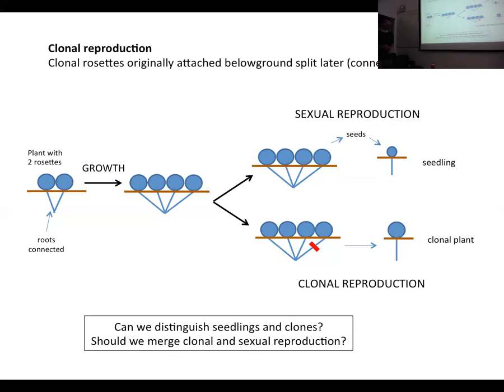Ideally we'd say seedlings are smaller and clonal plants are larger, but I don't think that's really the situation — there's probably a gradient in size. Maybe the solution for this first study is to not distinguish between clonal and sexual reproduction, or maybe we should — we can discuss this.